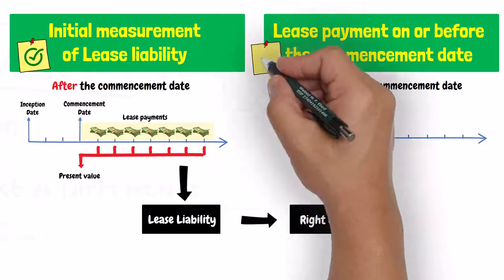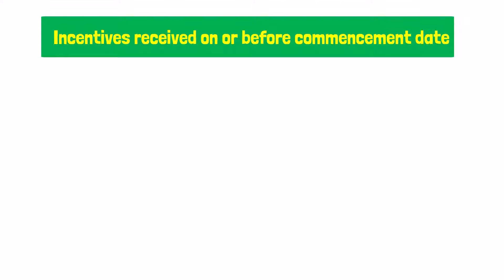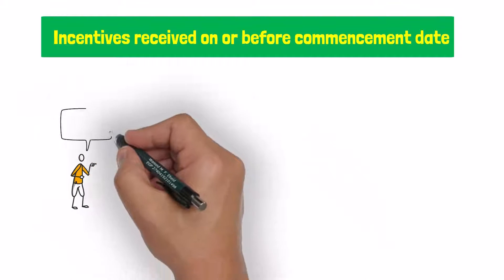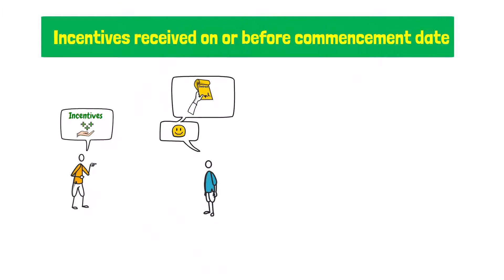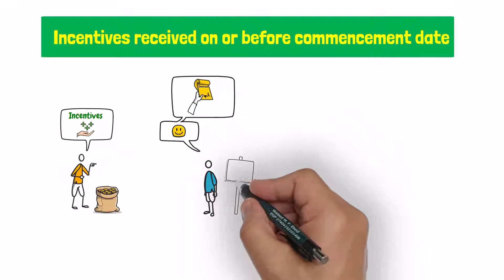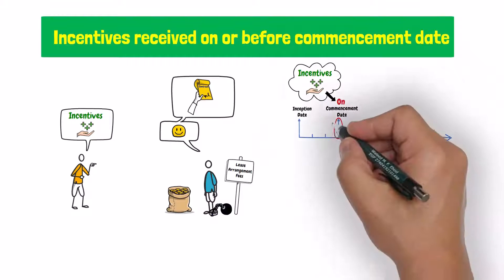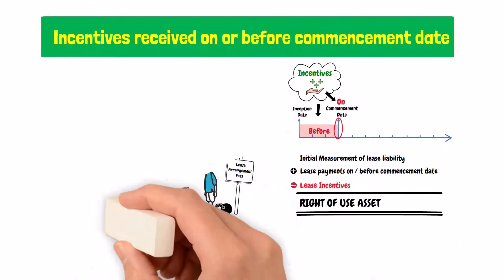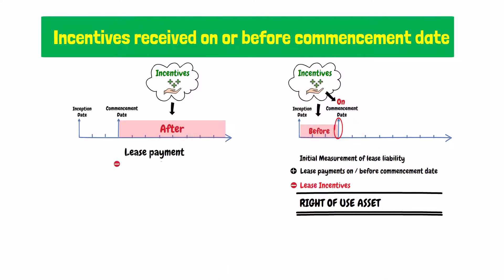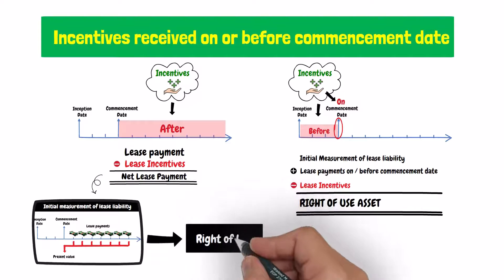We already covered these two components in the previous lecture. The third component is any lease incentives received by the lessee from the lessor on or before the commencement date. In leasing transactions, it is common for the lessor to offer incentives to encourage the potential lessee to sign the lease agreement. These incentives can be, for example, the reimbursement by the lessor of the lease arrangement fees. If these incentives were received by the lessee on or before the commencement date, then they should be deducted when measuring the right of use asset. But if they were received after the commencement date, then they should be considered in the initial measurement of the lease liability, which will then be reflected in the measurement of the right of use asset.